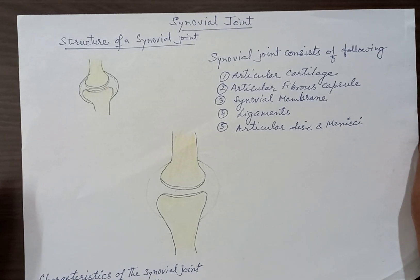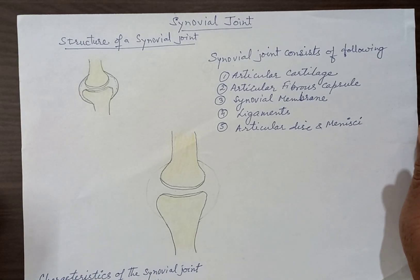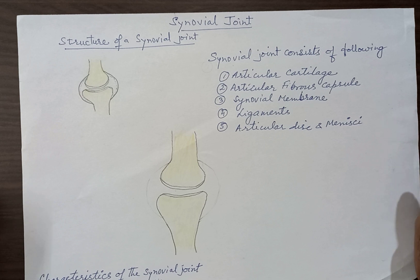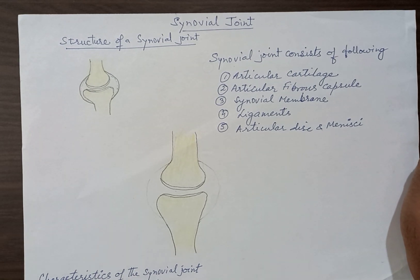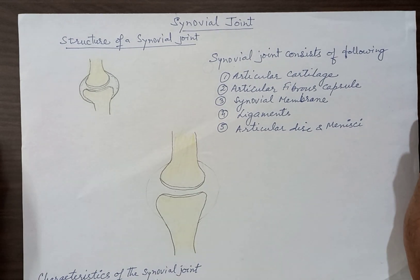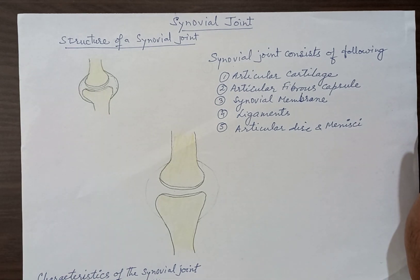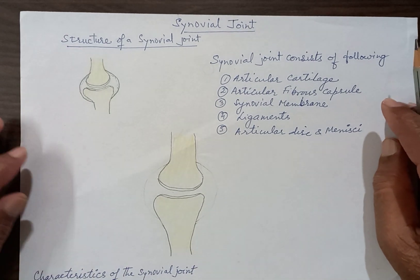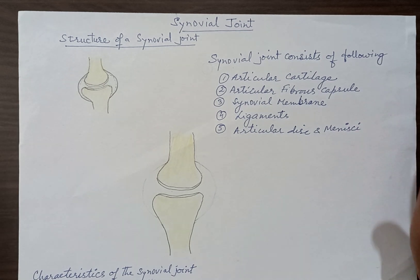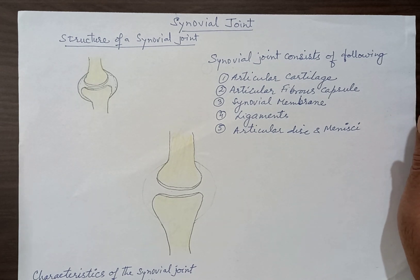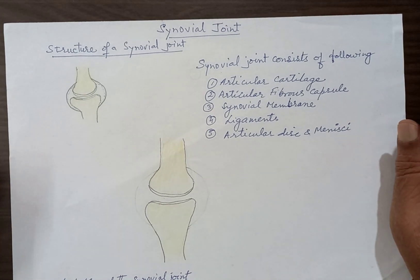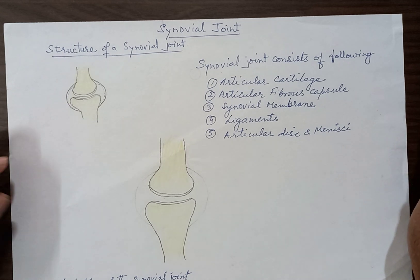A very good evening students. This is a chapter from General Anatomy and the name of the chapter is joints. Under the chapter of joints, you must have read many types of joints, but the synovial joint is the most commonly found in our body. Most of the joints in our body are of synovial variety. In this video, we will learn about the structure of a synovial joint.